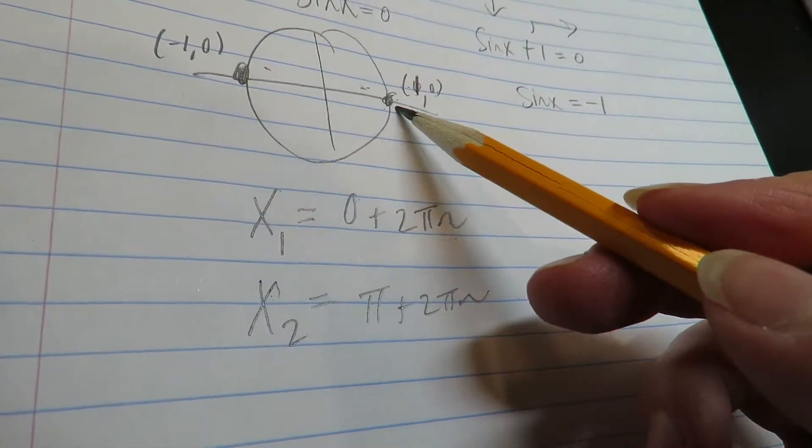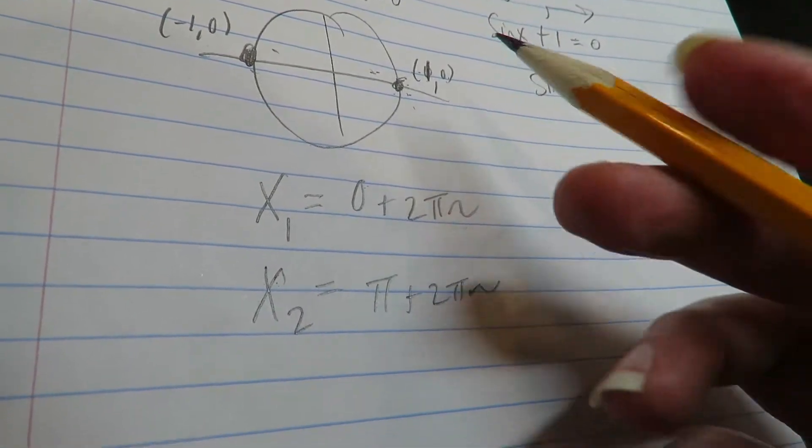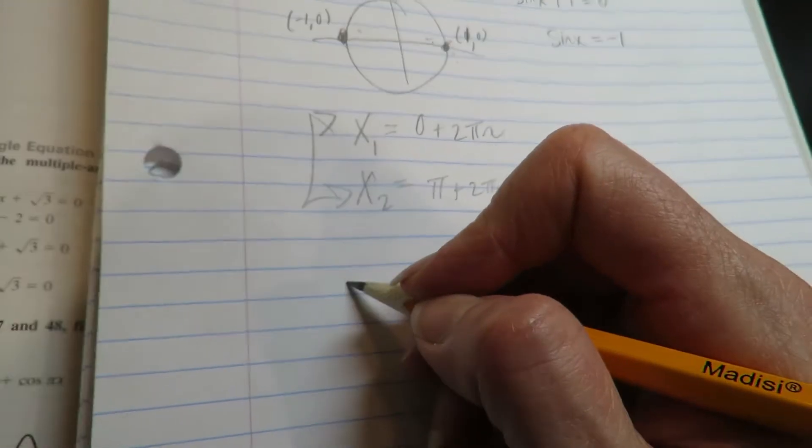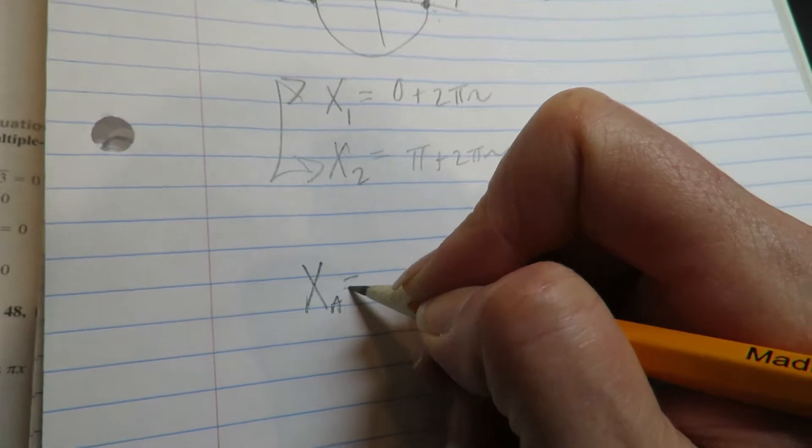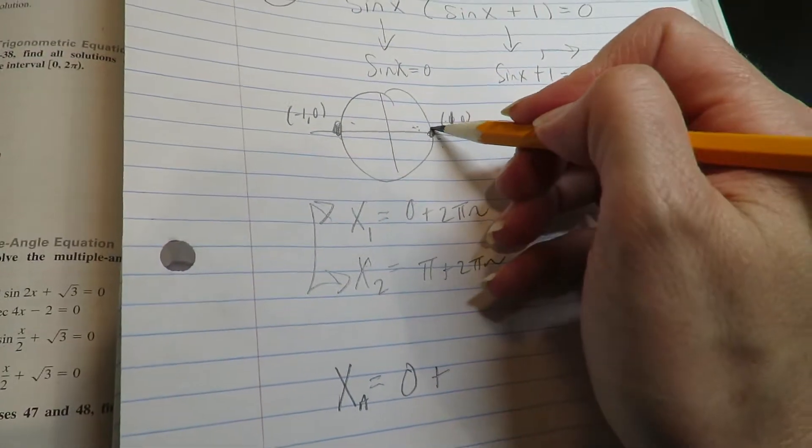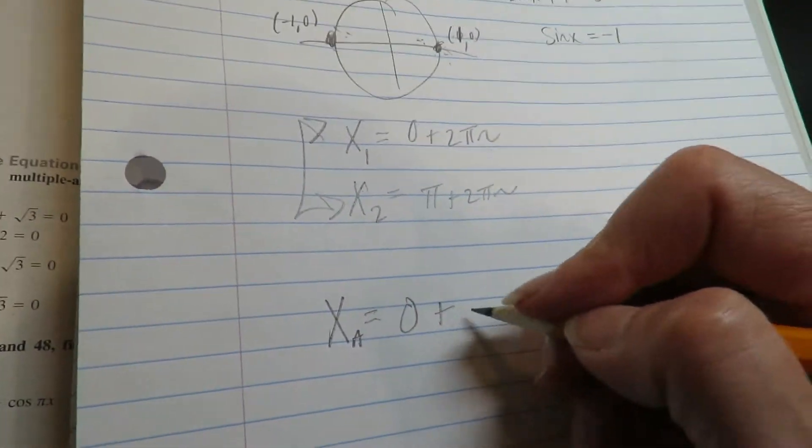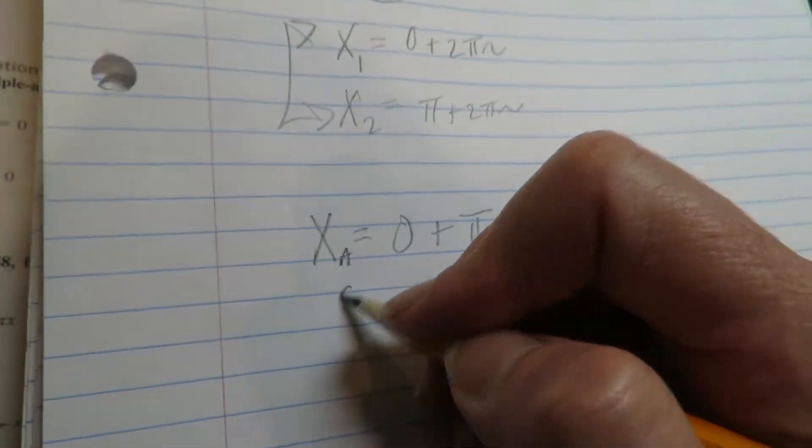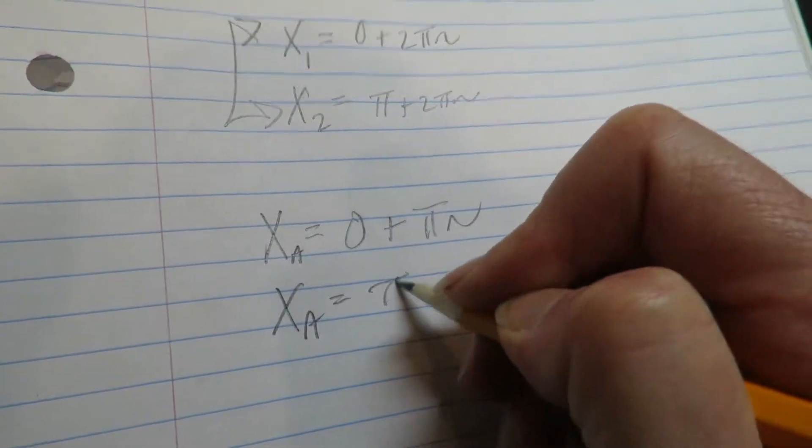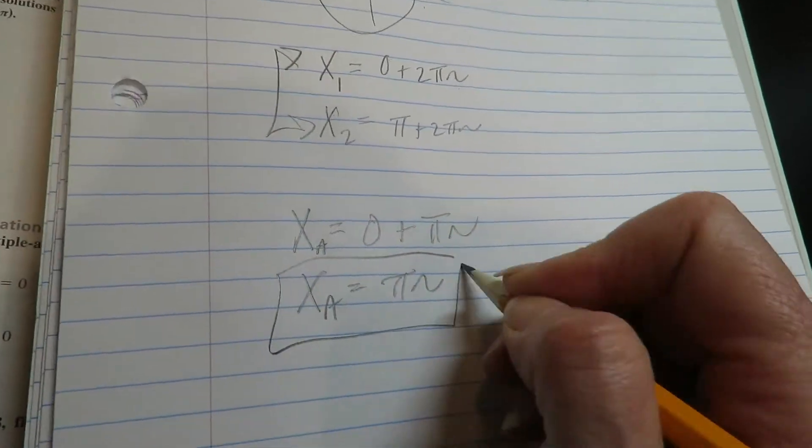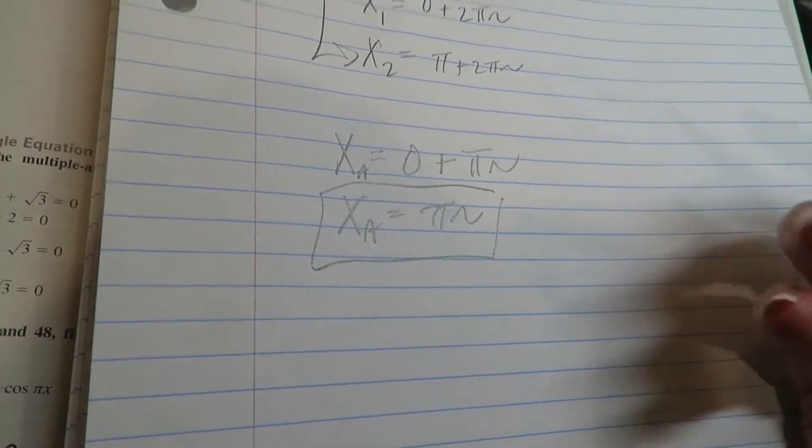Now, because these are equidistant, they're combinable. So, meaning that instead of writing two separate answers, I could just start at zero and add pi to get to the next answer and add pi to get to the next answer and so on. So if I just write pi n, then that actually combines all of these. So you have to see this as an equation that generates an infinite amount of answers.